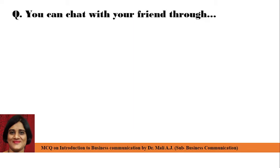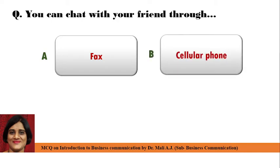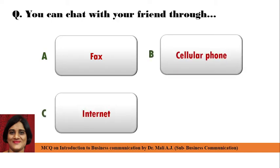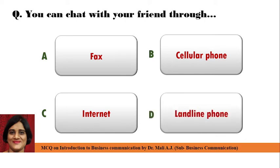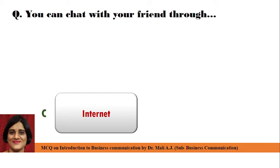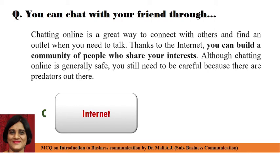Next question: You can chat with your friend via — Point A: Fax, Point B: Cellular phone, Point C: Internet, and Point D: Landline phone. Correct answer is Point C: Internet. We can chat with our friend through the internet. Because chatting online is a great way to connect with others and find an outlet when you need to talk. Thanks to the internet, you can build a community of people who share your interest. Although chatting online is generally safe, you still need to be careful because there are predators out there.